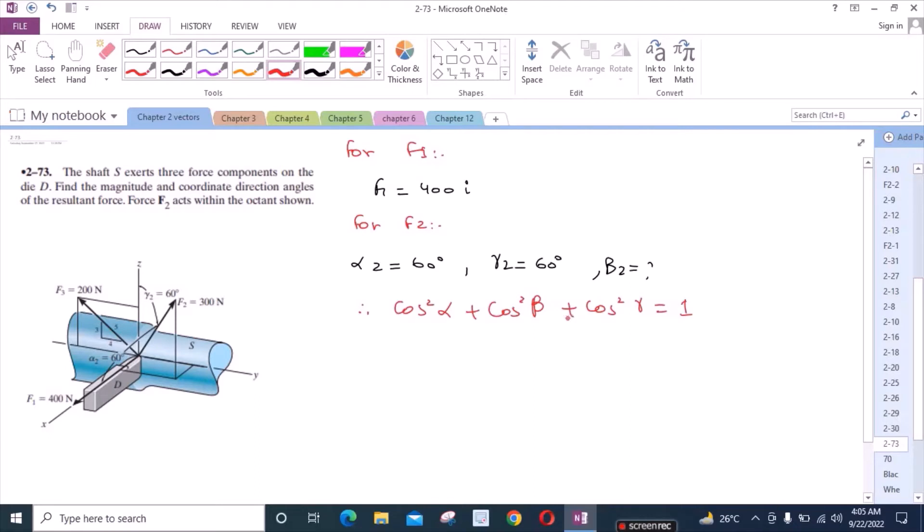We have cos²alpha + cos²beta + cos²gamma = 1. Upon putting all these values, we would have two values for beta: beta could be 45 degrees or beta could be 135 degrees.